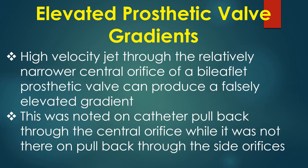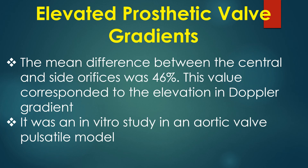A high velocity jet through the relatively narrower central orifice of a bileaflet prosthetic valve can produce a falsely elevated gradient. This was noted on catheter pullback through the central orifice but was not present on pullback through the side orifices. The mean difference between the central and side orifices was 46%, which corresponded to the elevation in Doppler gradient. This was demonstrated in an in vitro study using an aortic valve pulsatile model.